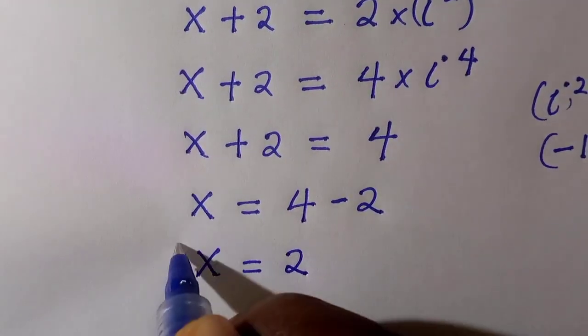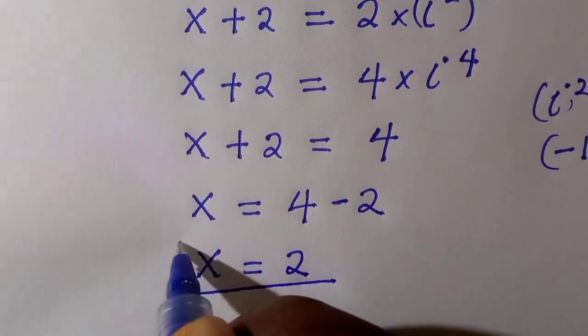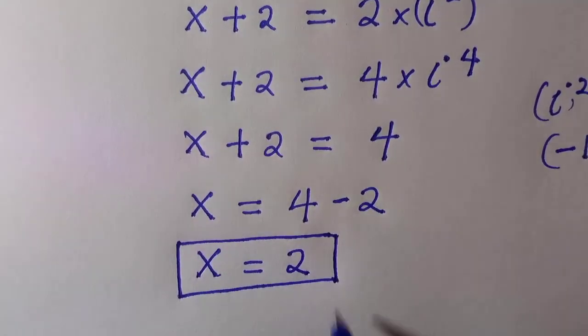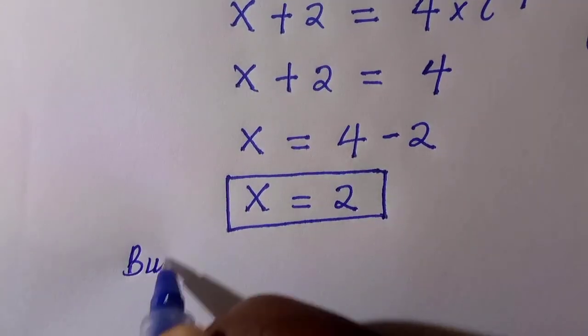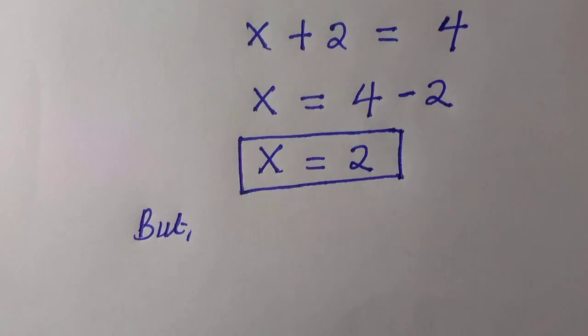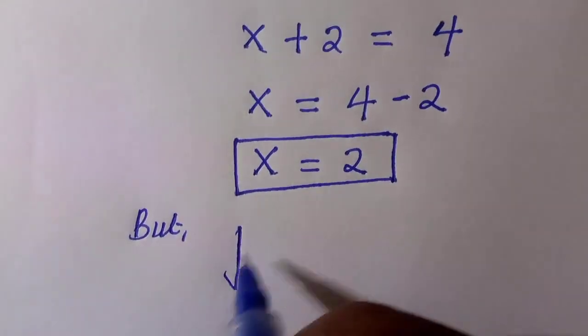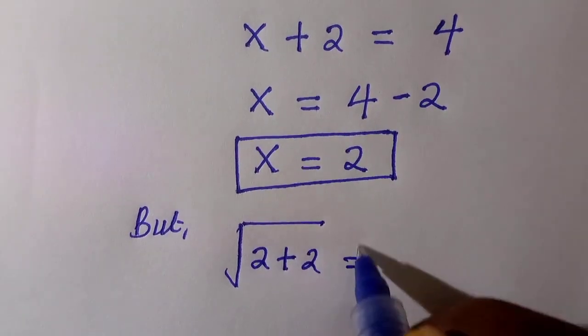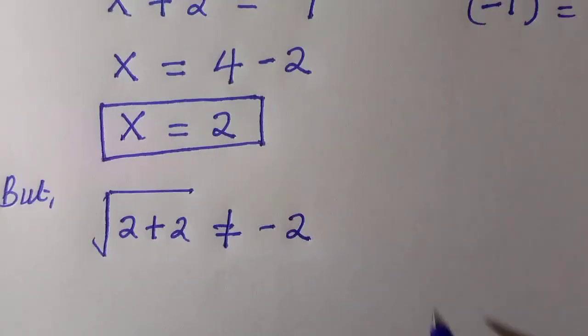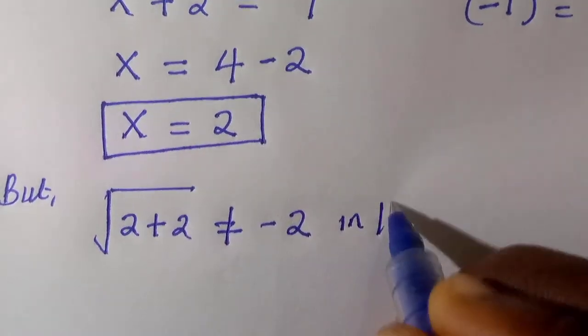I will consider this as the first method, but we are going to verify if this is equal in the given problem. We have square root of 2 plus 2, which is not equal to minus 2 in a real space.